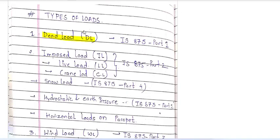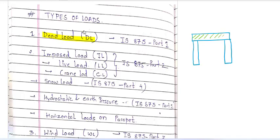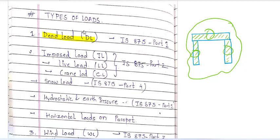Dead load is our structure — there are so many components. Suppose I have a structure: this is your beam, and this is the column. Dead load is the self-weight of the beam, self-weight of this column. Overall, the total load — the weight of each component — is the dead load.